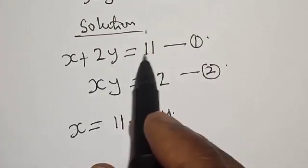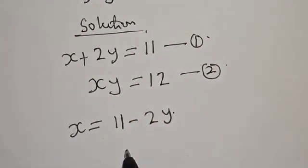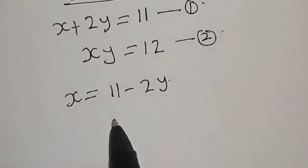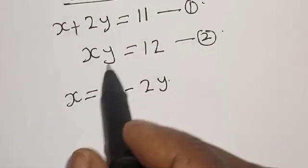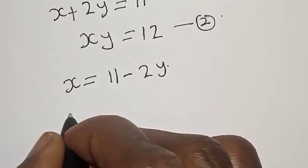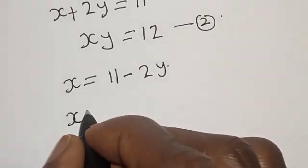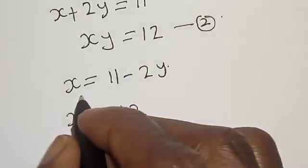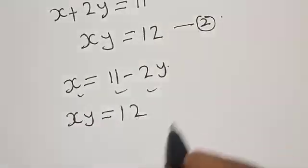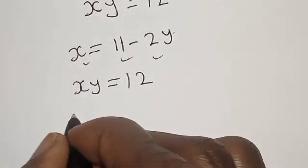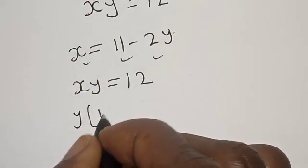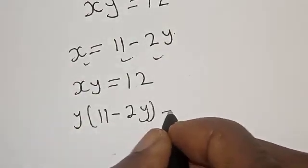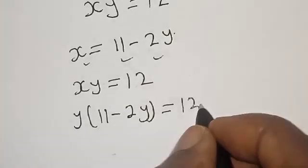That is, the plus 2y crosses over and becomes minus 2y. Then let's substitute for x in equation 2. We have xy is equal to 12, and x is equal to 11 minus 2y, so we have y into 11 minus 2y is equal to 12.